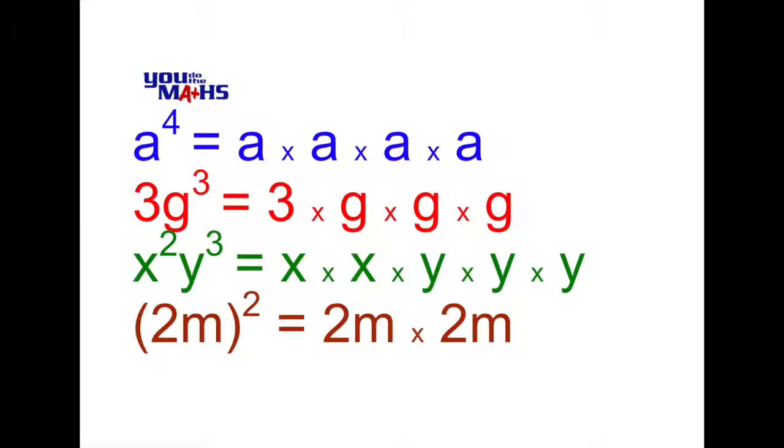Here 2m is in brackets, so everything in the bracket is multiplied out by itself again. It's 2m × 2m, or we also refer to this as 2m squared.